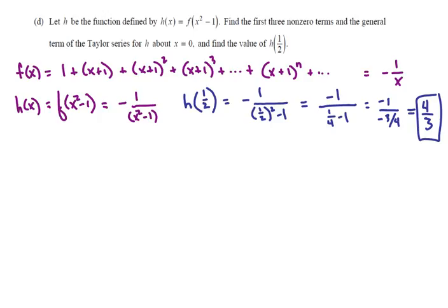Now we still need the first three non-zero terms and the general term. Just as we plugged into the function f(x), wherever we saw x we plugged in x²-1. If we go back to the Taylor series representation of that function, wherever we see x we could also plug in x²-1. So we substitute x²-1 into the series wherever we see x. When we simplify, those ones are going to go away.